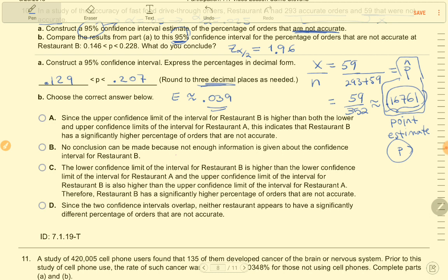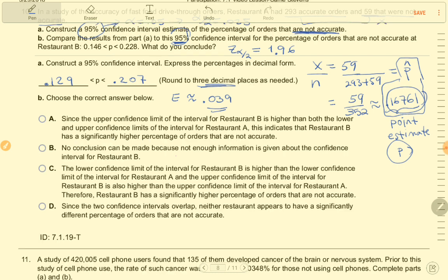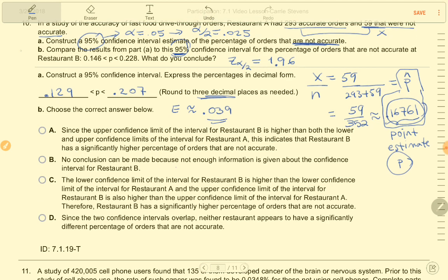Let's now choose the correct answer below. Since the upper confidence limit of interval for restaurant B is higher than both the lower and upper confidence limits of the interval for restaurant A, this indicates that restaurant B has a significantly higher percentage of orders that are not accurate. Maybe I need to go back and read up here where it tells us what part B is all about. Part B, compare the results from part A to this 95% confidence interval for percentage orders that are not accurate at restaurant B.